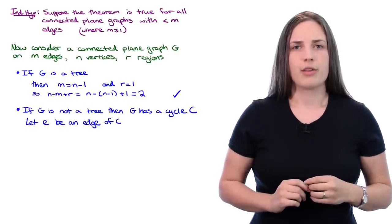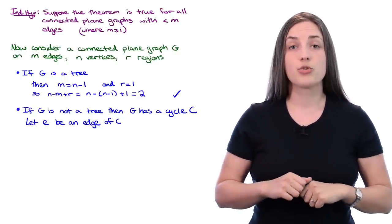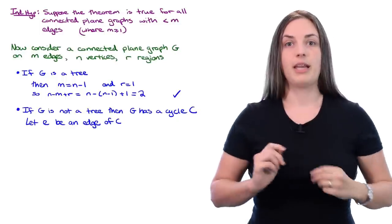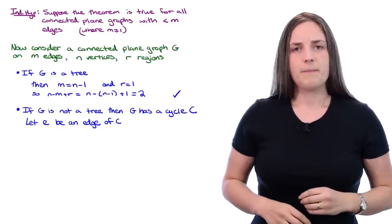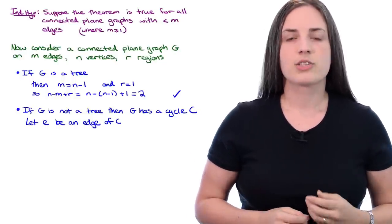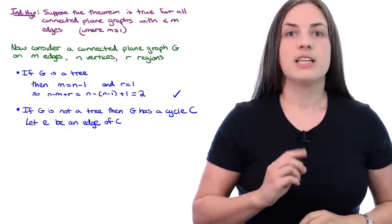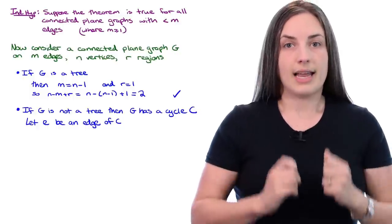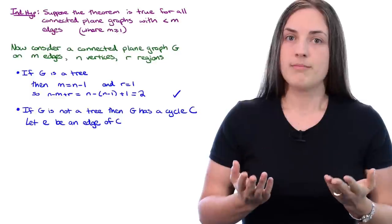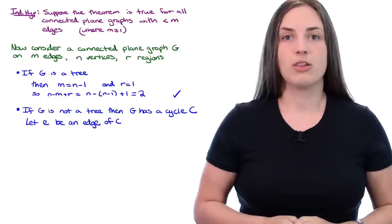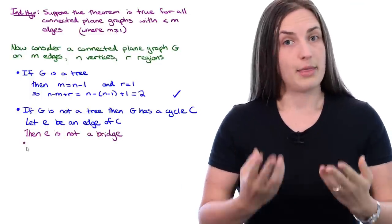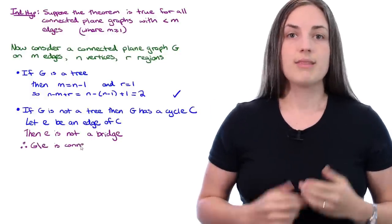We need to be careful of one thing though. If we remove the edge E, we need to make sure that we don't disconnect the graph. If removing E will disconnect our connected graph, then E would be a bridge edge. But we've seen that an edge is a bridge if and only if it lies on no cycle. However, E clearly lies on a cycle, so E is not a bridge. Therefore, the graph without edge E is still connected.